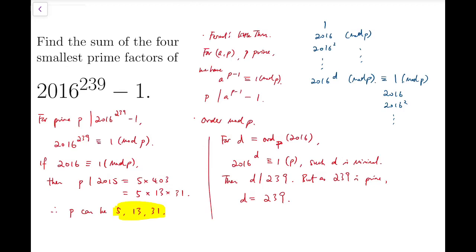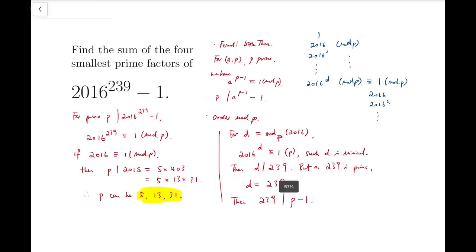Now, because the order is exactly 239, then 239 must divide p minus 1, by Fermat's Little Theorem.